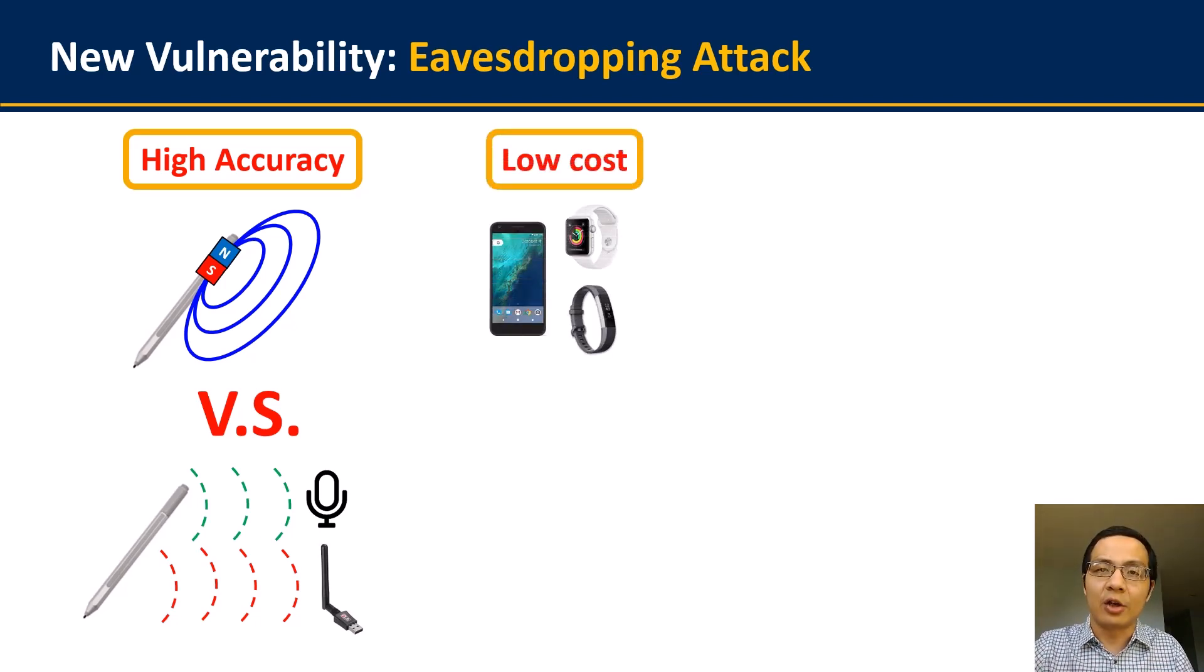Second, this attack can be easily launched only based on the readings from a single magnetometer. So being different from existing work that uses multiple custom magnetometers, the attacker can easily launch this attack with most of the commodity mobile devices, such as smartphones, smartwatches, and wristbands that are widely equipped with digital magnetometers. So in this way, this attack can be launched with very low cost to the attacker.